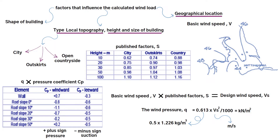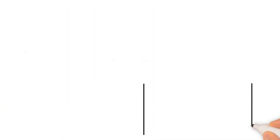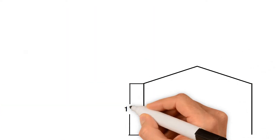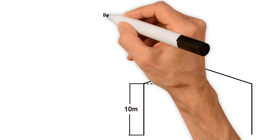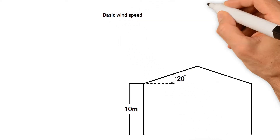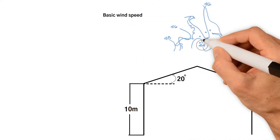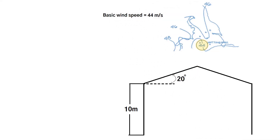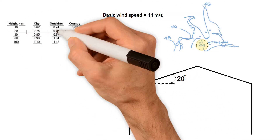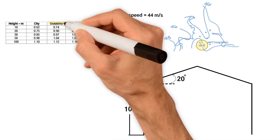Let's take a worked example on how to calculate the wind loads on a building. Here we have a 10-meter high building with a pitched roof of 20 degrees. The basic wind speed from the wind map is 44 meters per second, and the building is on the outskirts of a city.